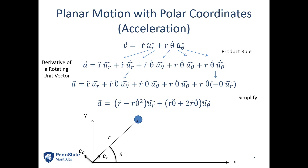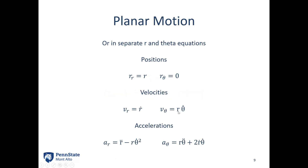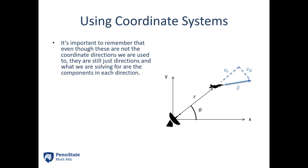Putting it all together: position is r in the ur direction; velocity is r-dot in the ur direction plus r·theta-dot in the u-theta direction; and acceleration is (r-double-dot minus r·theta-dot²) in the ur direction plus (r·theta-double-dot plus 2·r-dot·theta-dot) in the u-theta direction. We can separate these into components — all the r components on one side and all the theta components on the other. Even though these are not the coordinate systems we're used to like x and y, these are still just components, and we can break any vector down into components in those two directions.